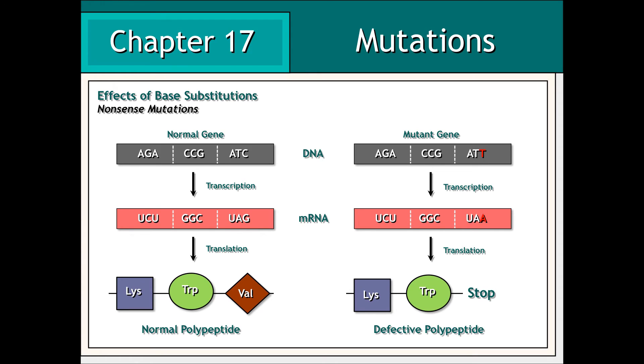Nonsense mutations involve base substitutions that create a stop codon where none previously existed. This results in premature chain termination during translation, whereby the resulting polypeptide fragment is almost always nonfunctional.